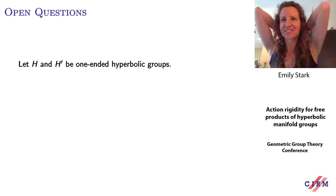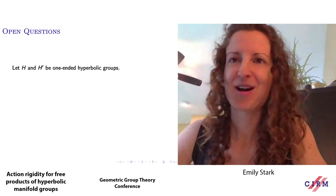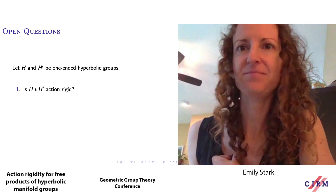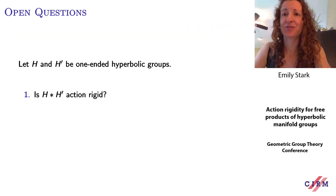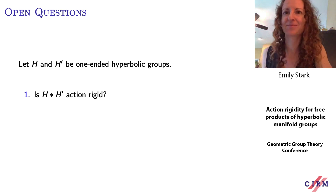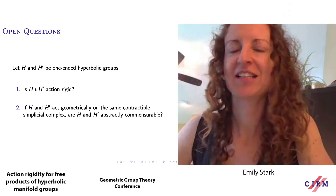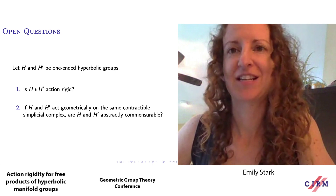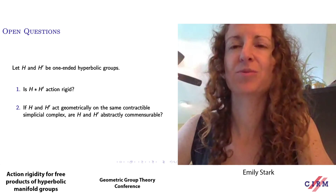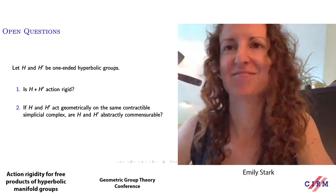Before explaining the proof, let me present two open questions. Suppose that H and H prime are one-ended hyperbolic groups. The first question: is the free product of H and H prime action-rigid? That is, if G is any group acting on the same space as this free product, does that imply the two groups are abstractly commensurable? We know just the case where H and H prime are manifold groups. A related question: if these one-ended hyperbolic groups H and H prime act geometrically on the same contractible simplicial complex, does that imply H and H prime are abstractly commensurable? We know this for manifold groups but it's open in general. Note that this is false without the hyperbolicity assumption, because Burger and Mozes give examples of infinite simple groups that act geometrically on the product of two trees.